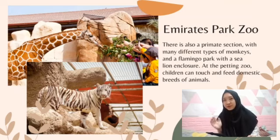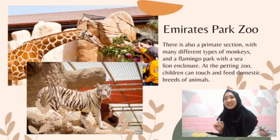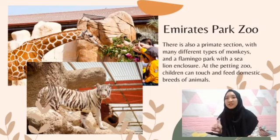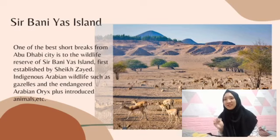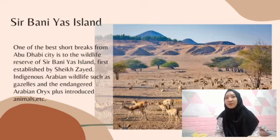Number 13 is Emirates Park Zoo. There is also a primate section with many different types of monkeys, and a flamingo park with a sea lion enclosure. At the petting zoo, children can touch and feed domestic breeds of animals.